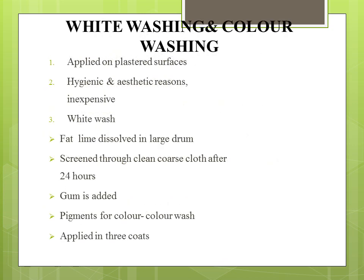Moving on to our first topic: white washing and color washing. White washing or color wash is applied on plastered surfaces. It is necessary for both hygienic and aesthetic reasons and is an inexpensive surface finish commonly used in rural areas. For white washing, fat lime is dissolved in a large drum, creamed through clean coarse cloth for up to 24 hours, and gum is added. For color washing, pigments are added and it is applied in three coats.